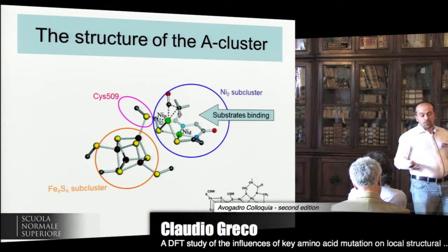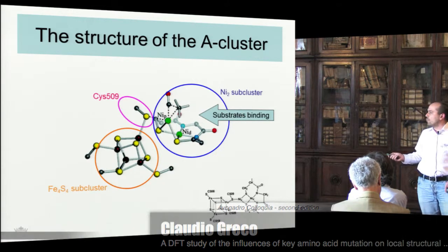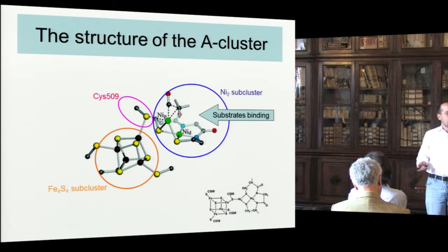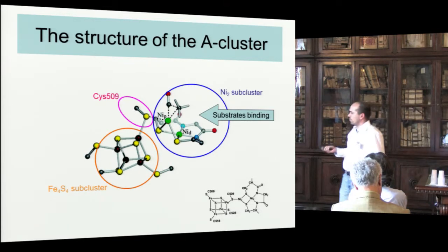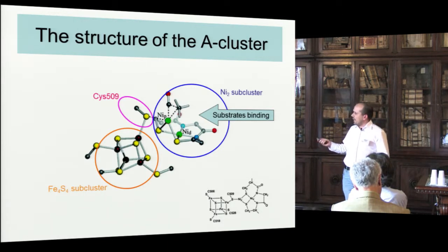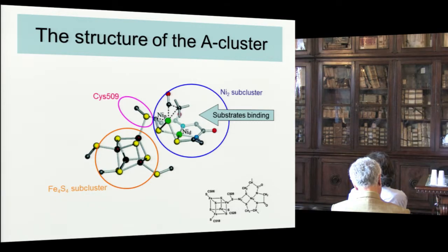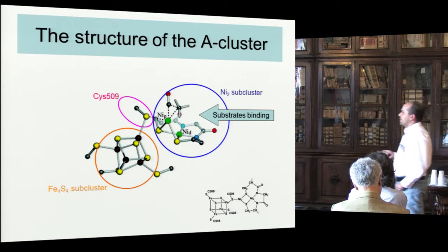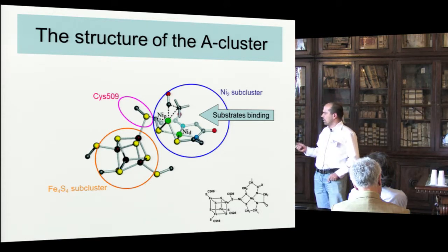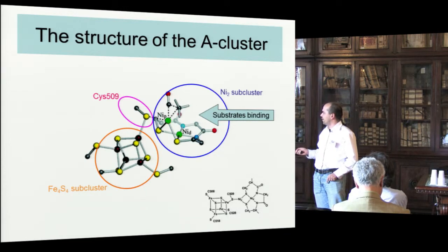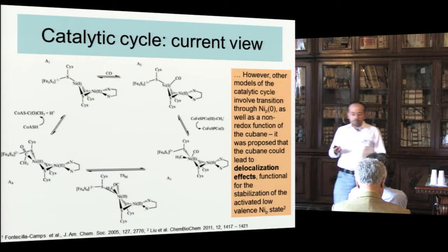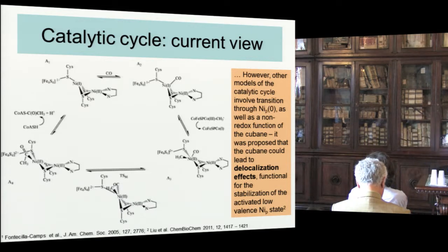It is essentially a binuclear complex composed by an iron-4S4 cluster — a rather classical one, not different from those commonly found in thioredoxins — and then there is a dinickel site, which is the site directly involved in the chemistry of this enzyme. These two subclusters are joined to each other by means of cysteine 509 in the sequence of the protein.